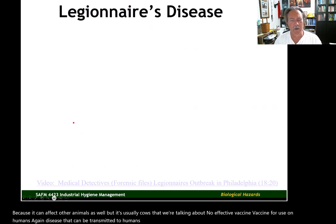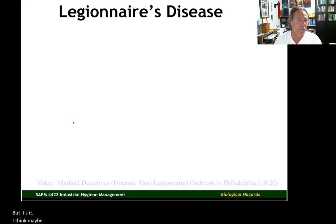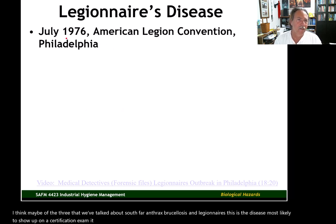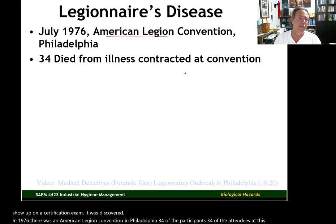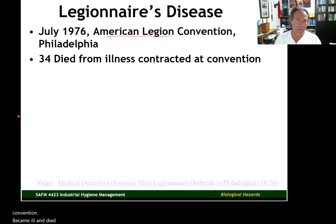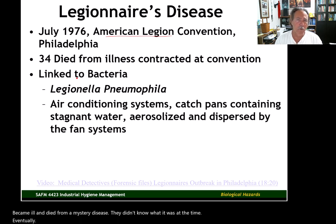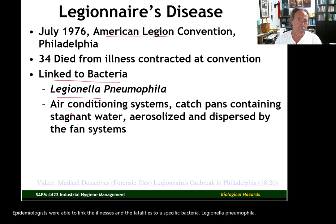Legionnaire's disease is also very rare, but of the three we've talked about — anthrax, brucellosis, and Legionnaire's — this is the disease most likely to show up on a certification exam. It was discovered in 1976 during an American Legion convention in Philadelphia, where 34 of the attendees became ill and died from a mystery disease. Epidemiologists were eventually able to link the illnesses and fatalities to a specific bacteria: Legionella pneumophila.